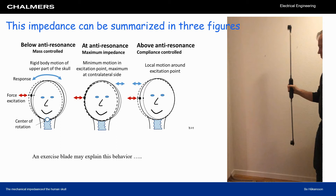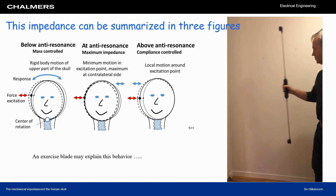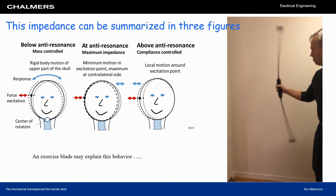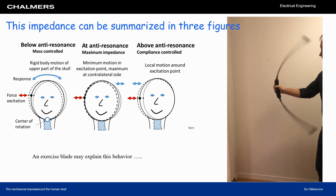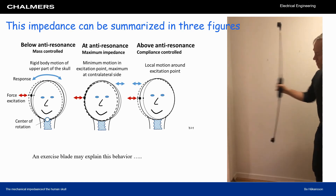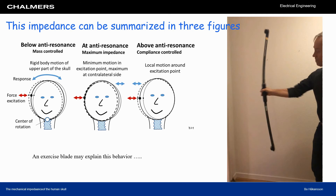Third, above the anti-resonance, only the attachment area is moving. Here you see the blade moving as a rigid body at slightly increasing frequency, and here we have the anti-resonance with hardly no motion in the handle. Then increasing again, we have all the motion in the handle.